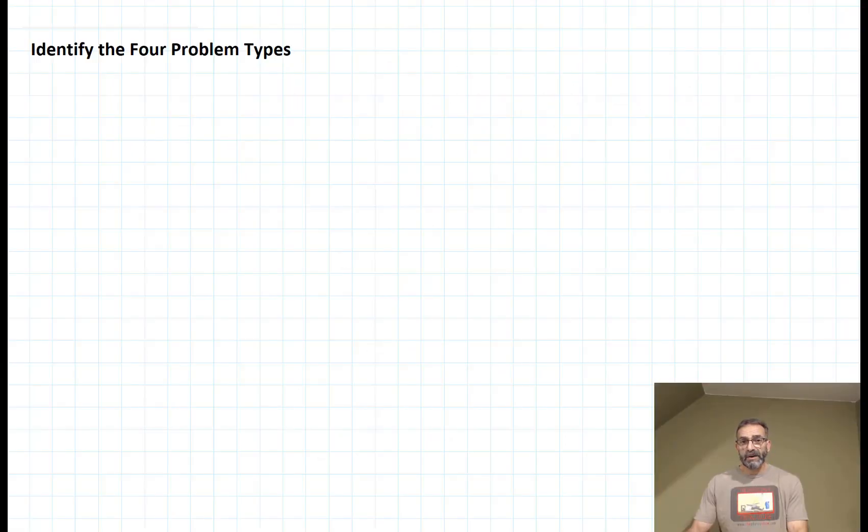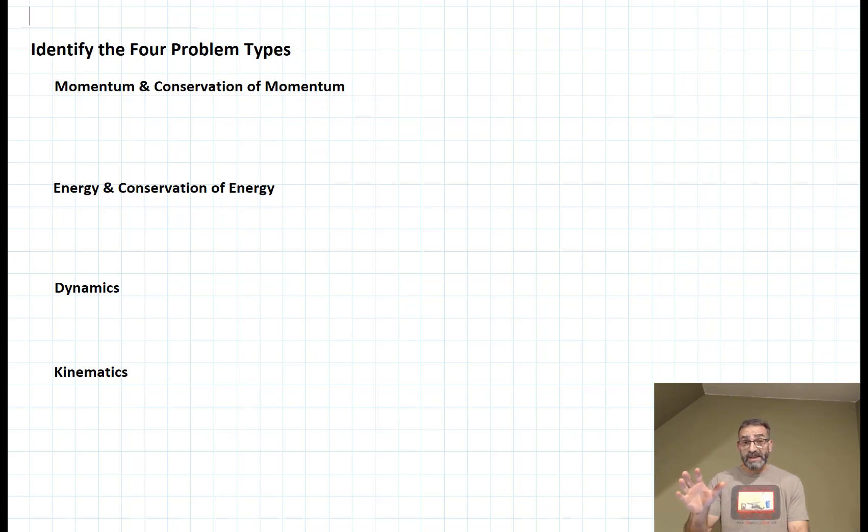In mechanics, there really are only four types of problems: momentum and the conservation of momentum, energy and the conservation of energy, dynamics, and kinematics. In most traditional classes, these are taught in a linear fashion - one topic is taught very thoroughly, when it's complete the next one is started. Of course, we're not going to do that.